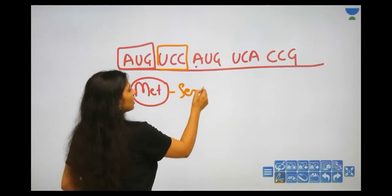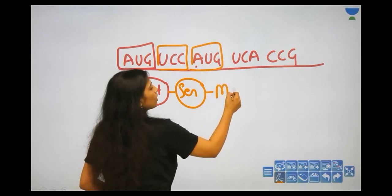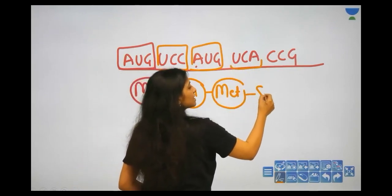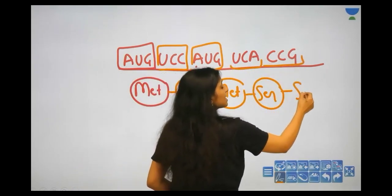So, serine will come here. Then, AUG is the code? Methionine is the code of methionine. Then, UCA is the code of serine. UCC is the code of serine.